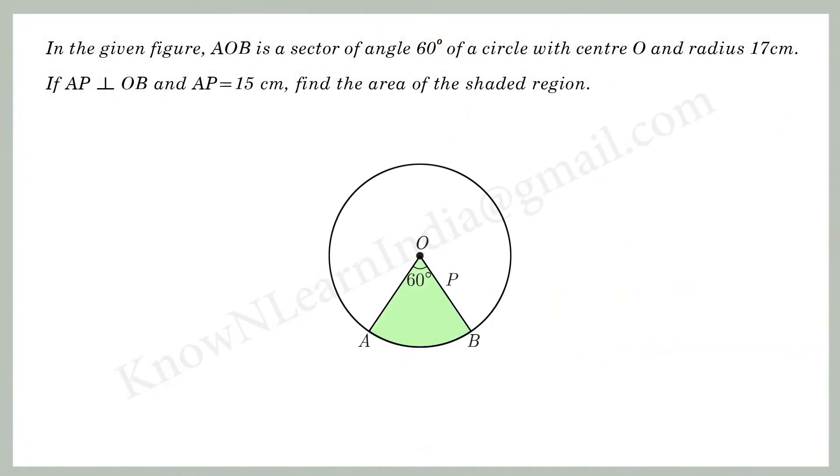In the given figure, AOB is a sector of angle 60 degree of a circle with center O and radius 17 cm. If AP perpendicular to OB and AP equal to 15 cm, find the area of the shaded region.